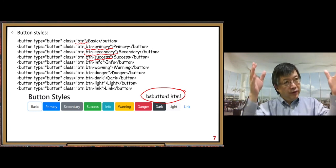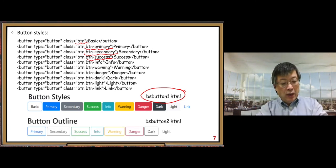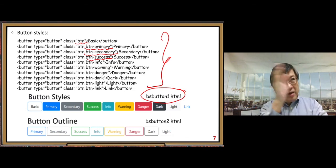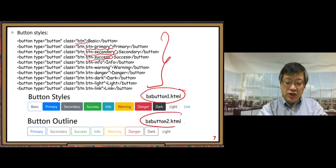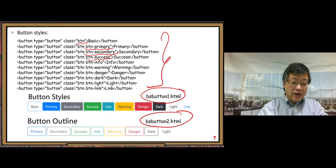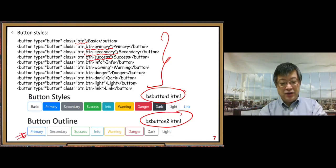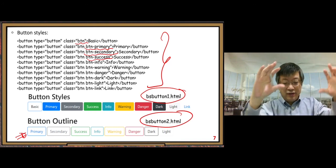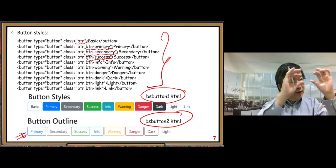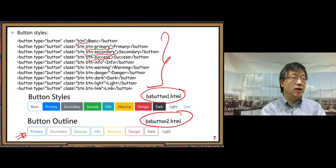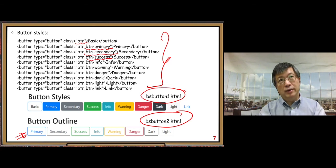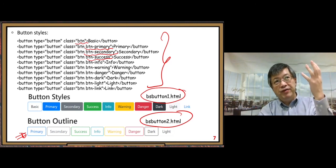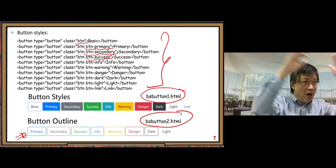Another example is button outlines. In bsbutton2.html you can see buttons without background colors — only the outline part has different colors, and the font is also in different colors, with a white background. There are many other styles, but these give you the basic ideas. If you want different button styles, you can go to the Bootstrap documentation to find the right one.